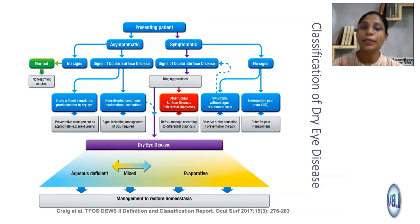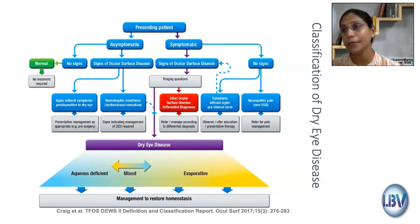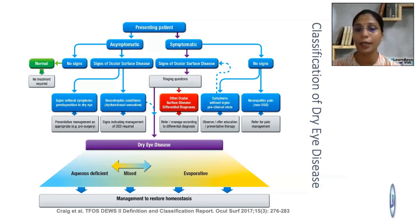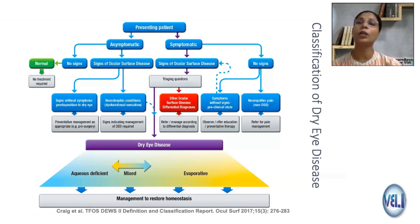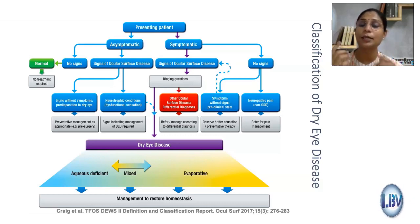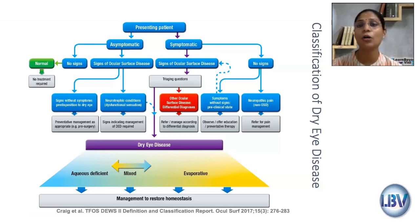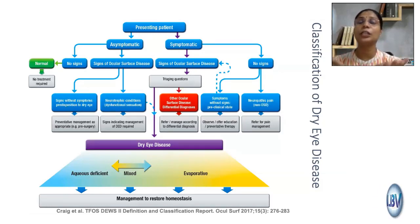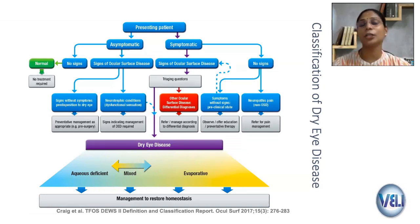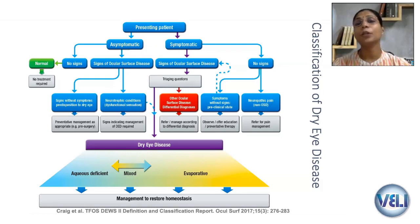There are subtypes of dry eye disease: aqueous-deficient dry eye, evaporative dry eye, or a combination of both. Whatever the subtype, the goal of management is to restore homeostasis — the balance between tear production and evaporation. To efficiently manage a case of dry eye, you need to identify the subtype and then manage appropriately.